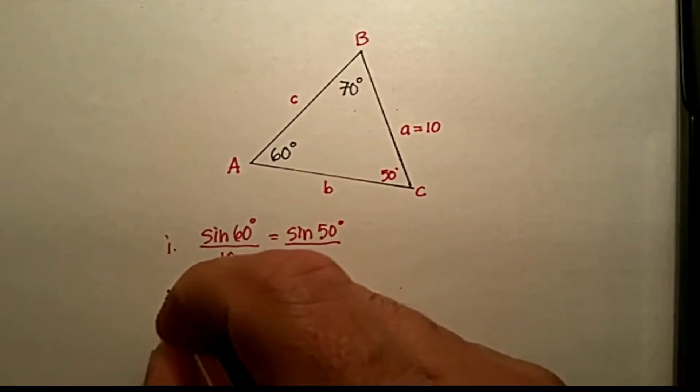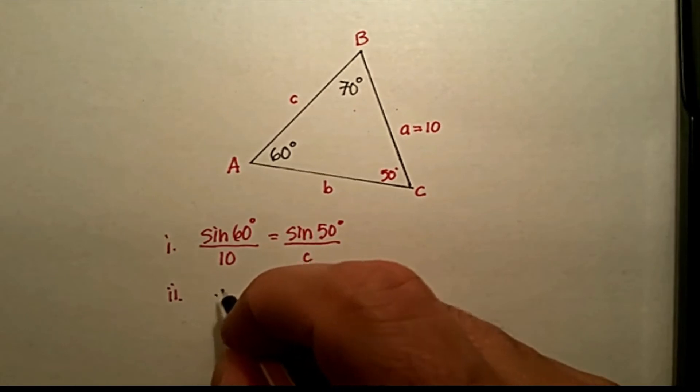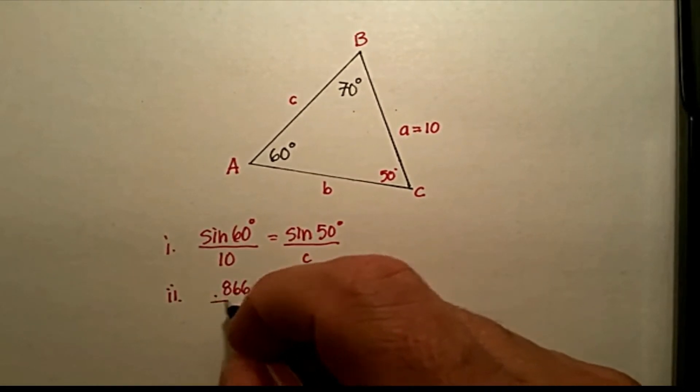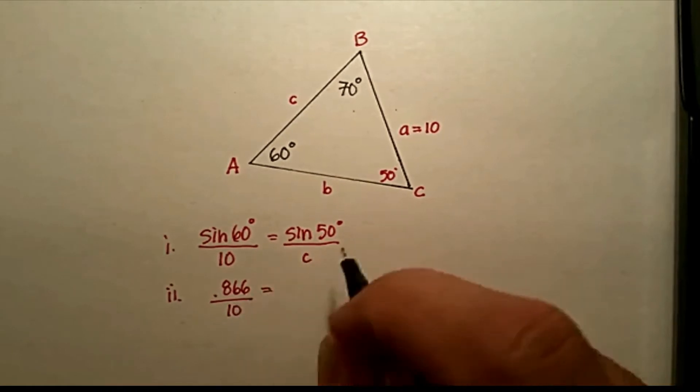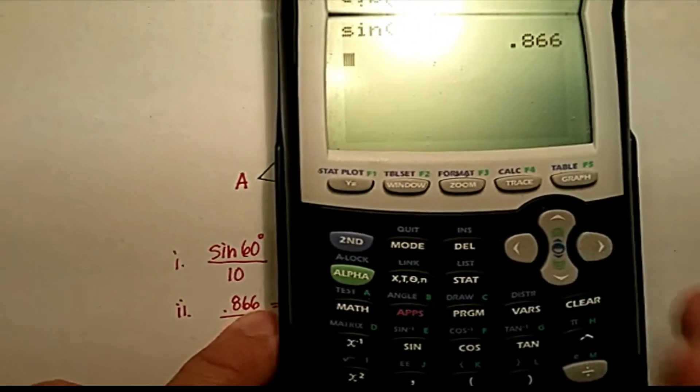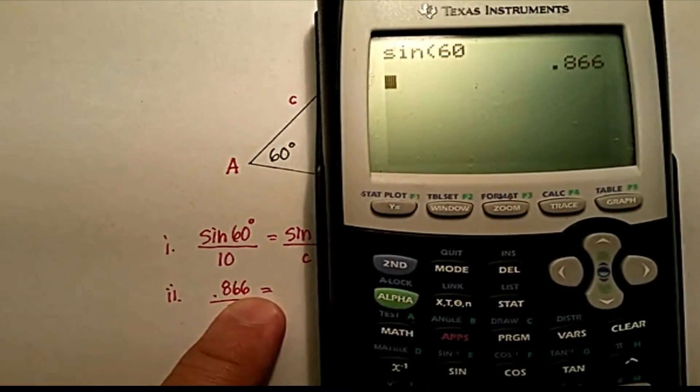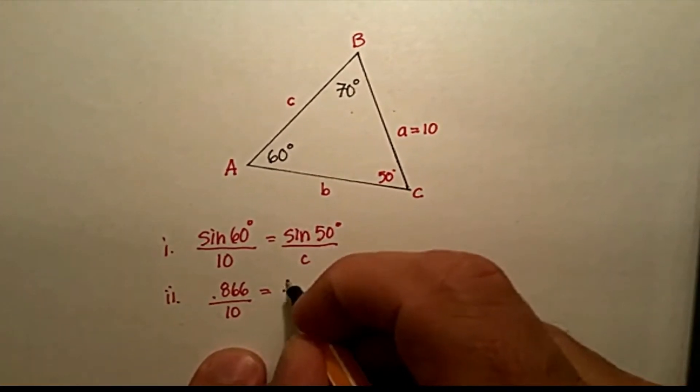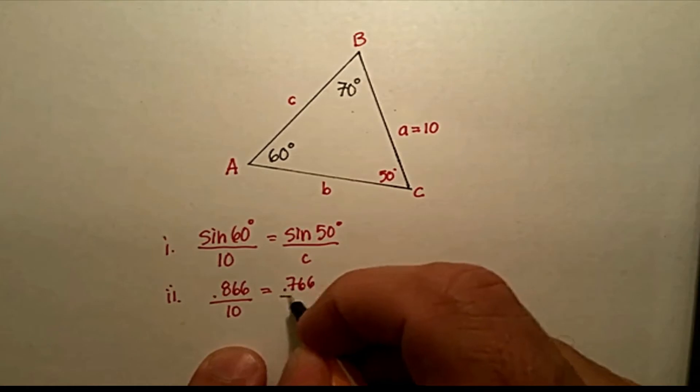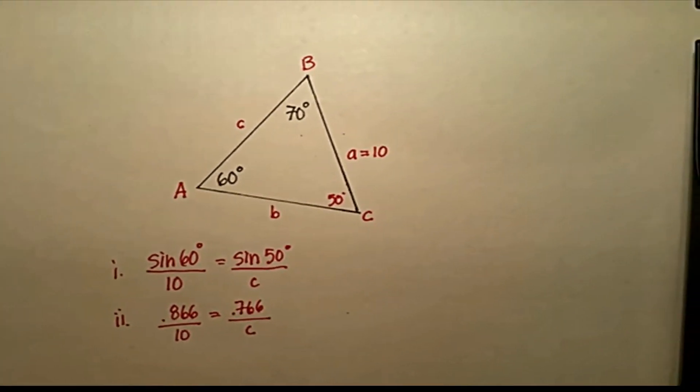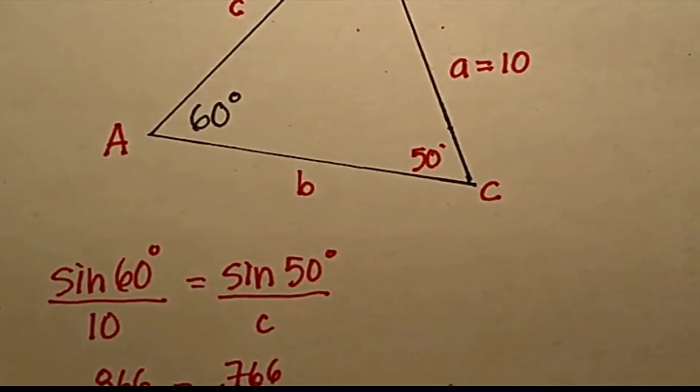So, step one, step two, 0.866 divided by 10 should be equal to the sine of 50. Let's go ahead and do that. Sorry about the glare. Sine of 50, 0.766. And that's going to be over C.